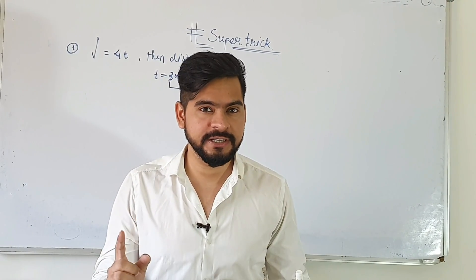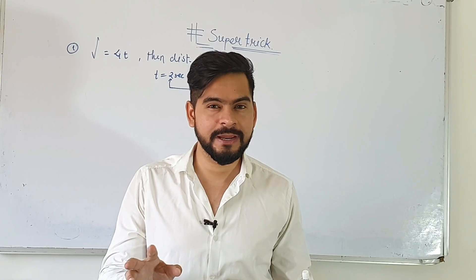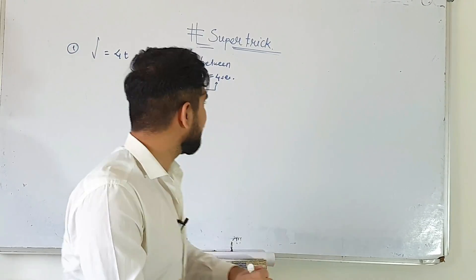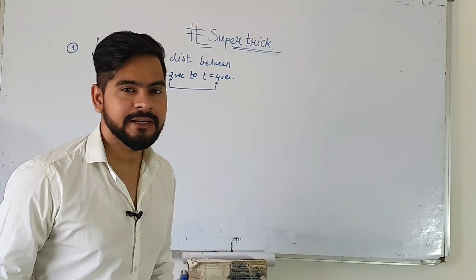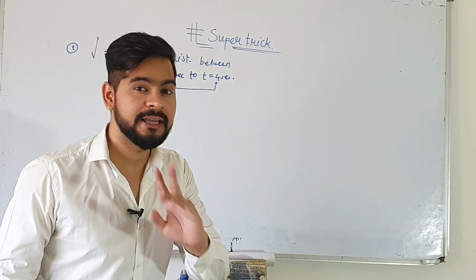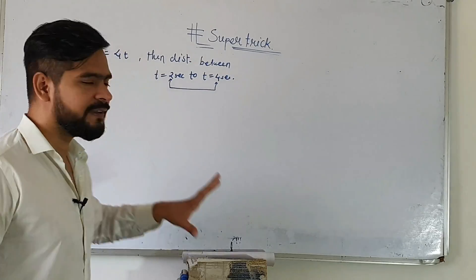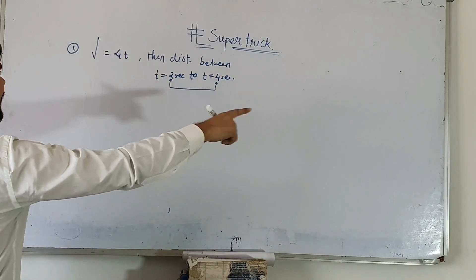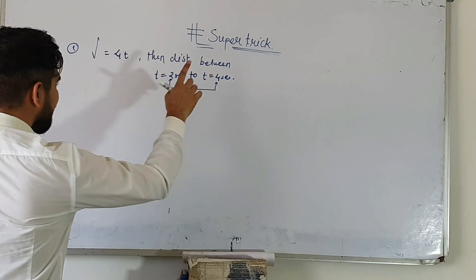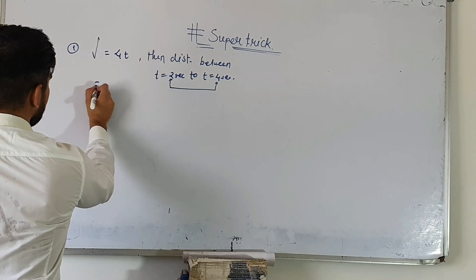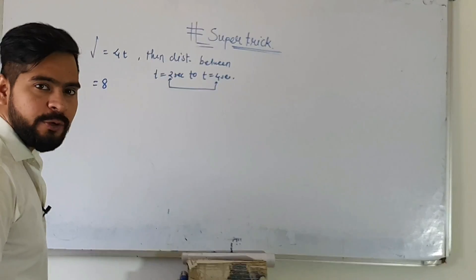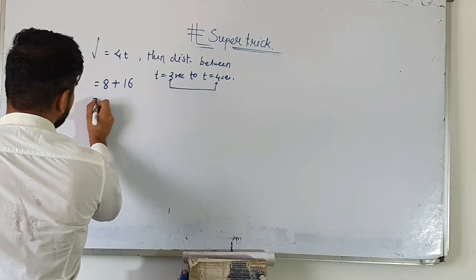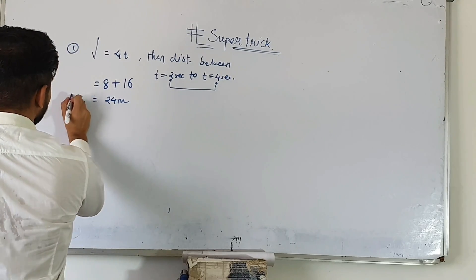Alright buncha party, so the question is: V is given and you have to find distance for this time interval. First of all, you have to see how much time is the gap. Is the gap 2 seconds? Yes — 2 to 4 seconds, obviously a gap of 2 seconds. So simply, T equals 2 seconds, place it here — this is 8, 4 into 2 is 8. Then take T as 4, that is 16. So 100% your answer is 24 meters. Trust me, buncha party — an amazing trick!